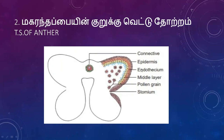The four wall layers of the anther are: epidermis, endothecium, middle layer, and tapetum. The tapetum layer is important — it supplies nutrients to the developing microspore mother cells and microspores. The tapetum layer is indicated in the diagram.